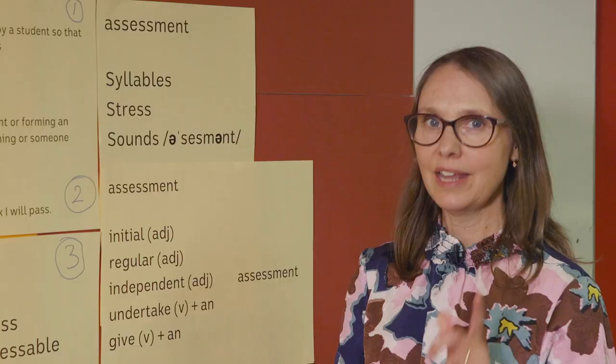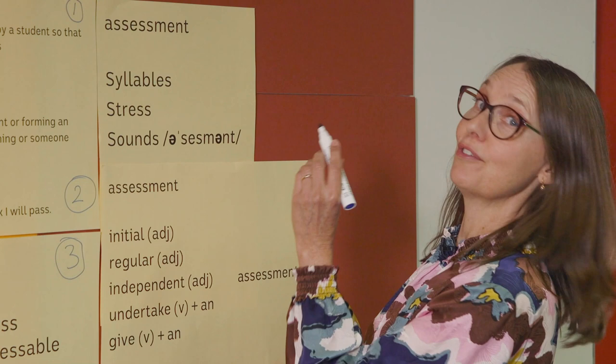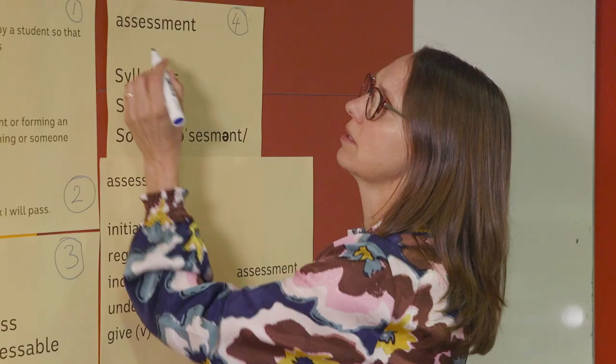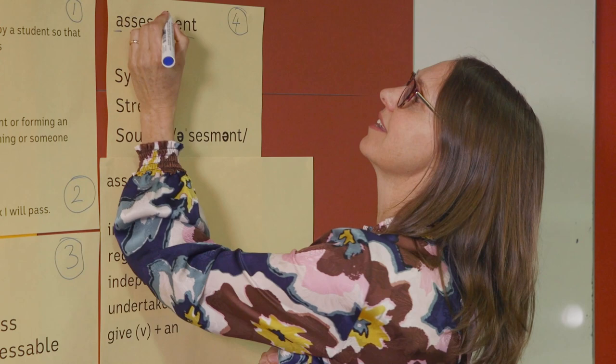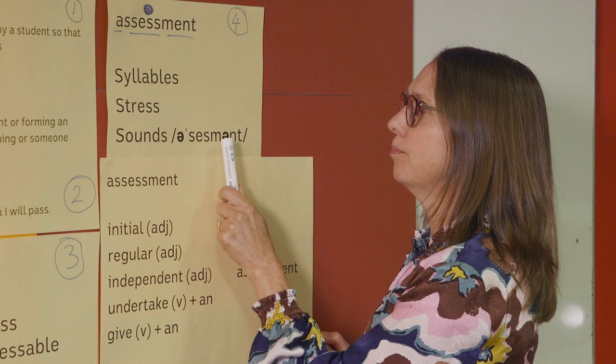Next, the fourth step: pronunciation. Sounding out the word and working out how many syllables it has, and where the stress falls, will help you recognise the word when you hear it and give you the confidence to use it. How many syllables in assessment? A-cess-ment — assessment. Which syllable takes the main stress? Assessment — sess. There are actually eight sounds in this word: A-cess-ment, as opposed to ten letters.